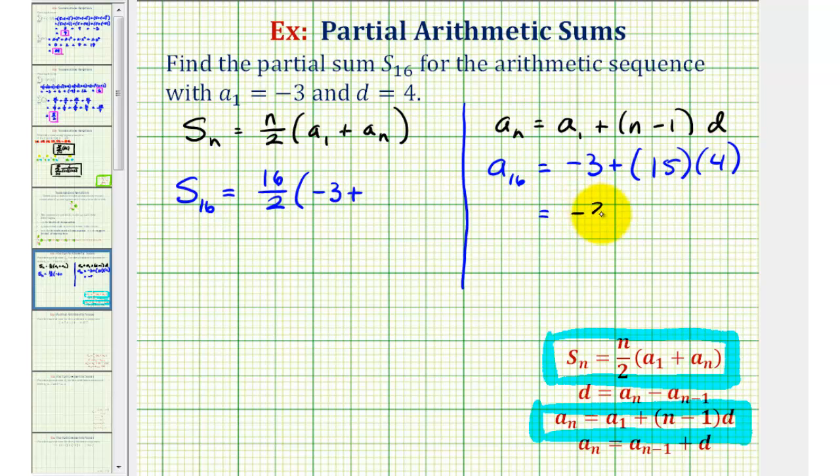So we have negative three plus 15 times four is equal to 60. Negative three plus 60 is equal to 57. So we know A sub 16, the last term in our partial sum, would be 57.